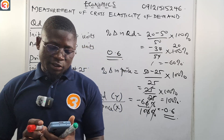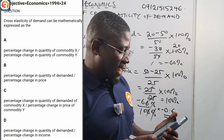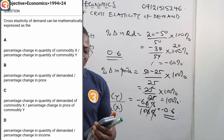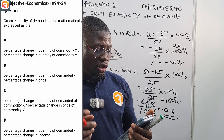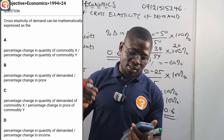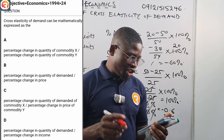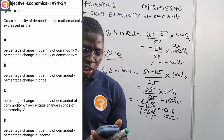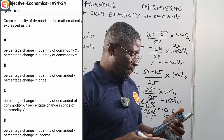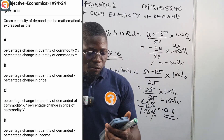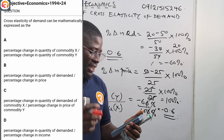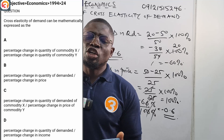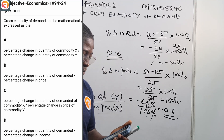Now, JAMB 1994 number 24: cross elasticity of demand can be mathematically expressed as — A: percentage change in quantity demanded of X over percentage change in quantity demanded of Y; B: percentage change in quantity demanded over percentage change in price; C: percentage change in quantity demanded of commodity X over percentage change in price of commodity Y; D: percentage change in quantity demanded over percentage change in income. For cross elasticity, we talk about percentage change in quantity demanded over percentage change in price.